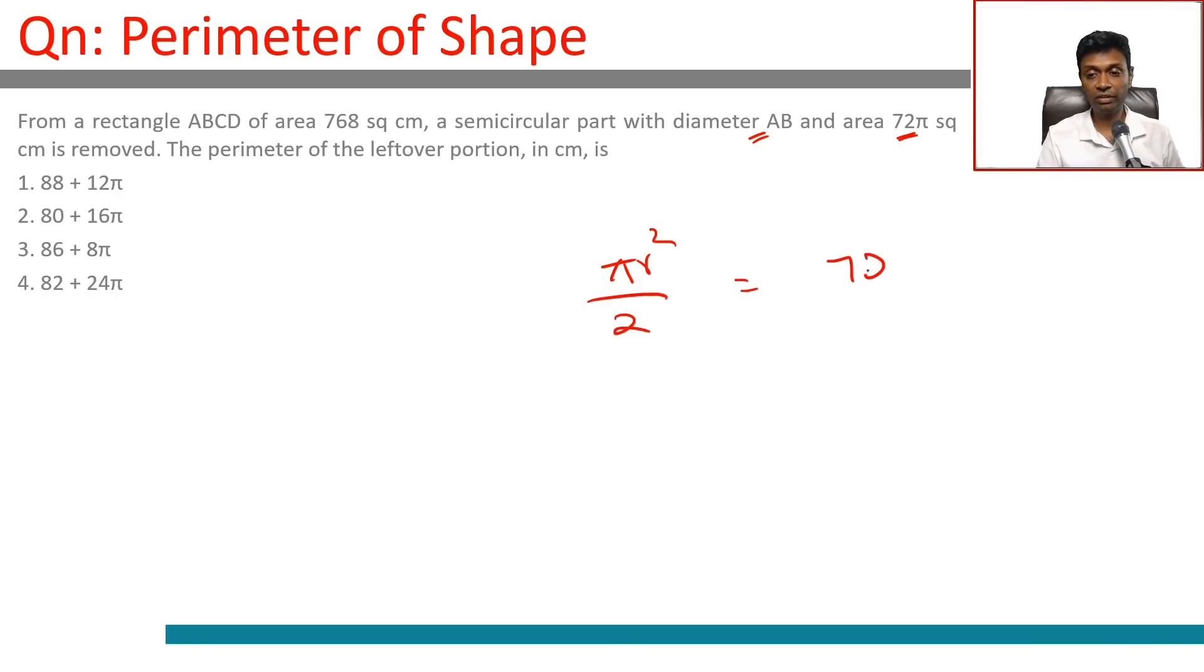Setting πr²/2 = 72π, the π cancels, giving r² = 144, so r = 12. The radius of the semicircle is 12, therefore the diameter AB is 24.